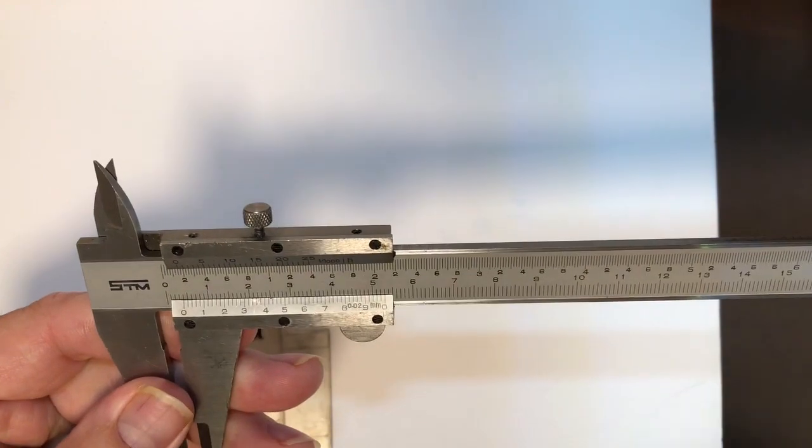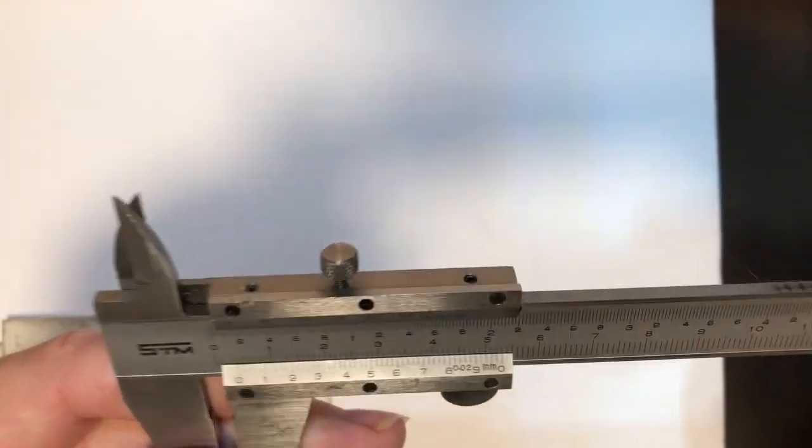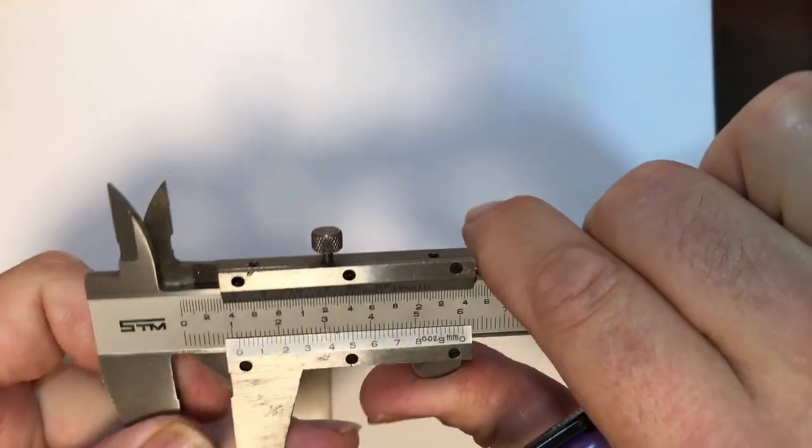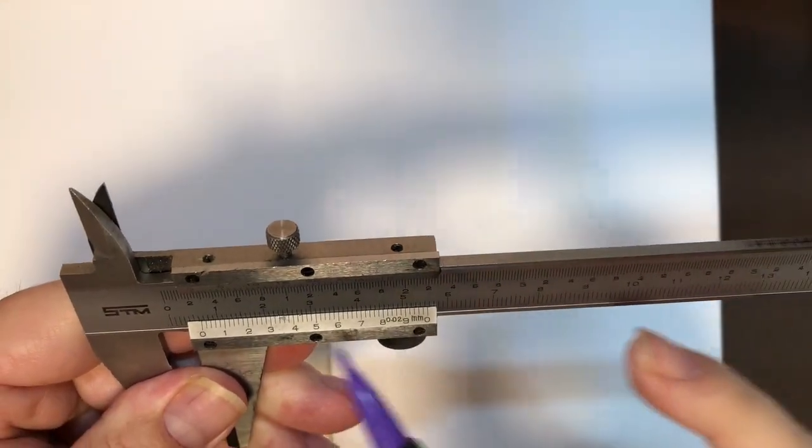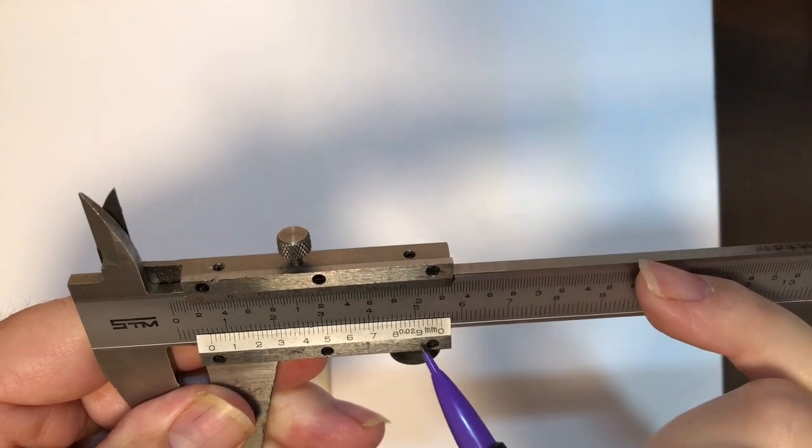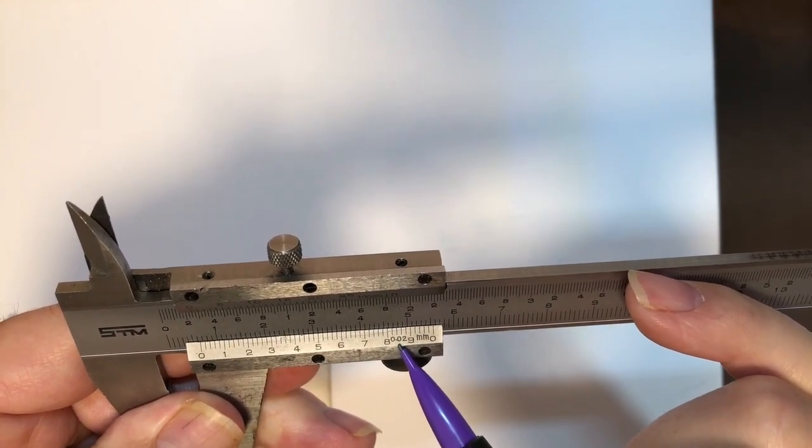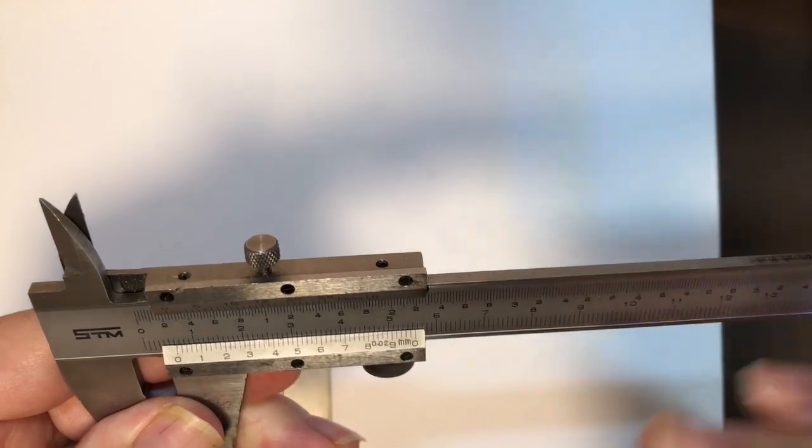Our next true vernier. Pretty straightforward stuff. The millimeters instead of being 0.05 millimeter, this one's 0.02 millimeter. We'll get into how to measure that in a moment.